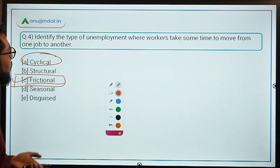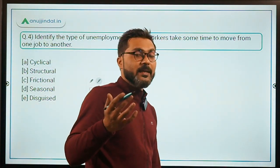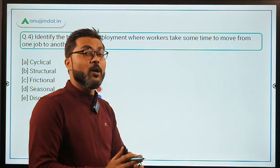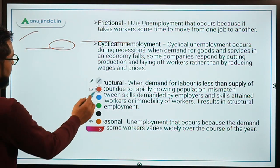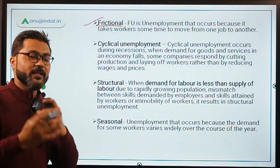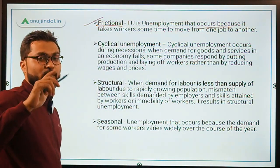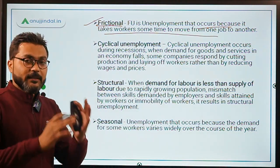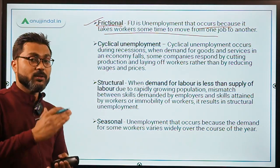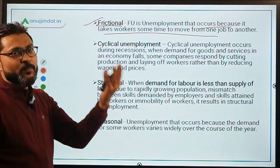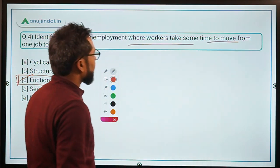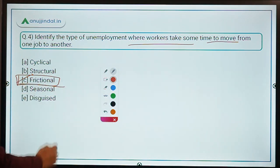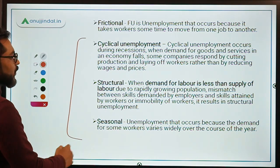Question four is from the static part on employment. Identify the type of unemployment where workers take some time to move from one job to another. The types of unemployment include frictional unemployment — which occurs because it takes workers some time to move from one job to another. The correct answer is option C — frictional unemployment. Cyclical unemployment occurs during recessions when demand for goods and services falls and companies cut production, laying off workers.